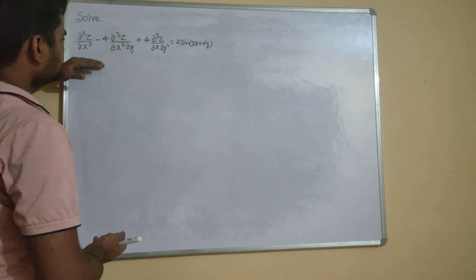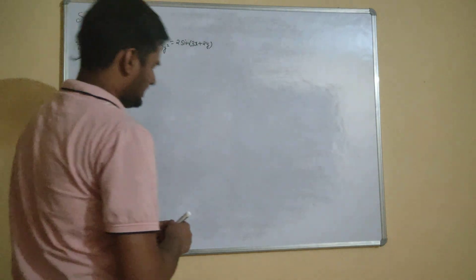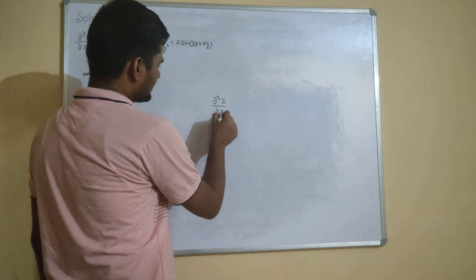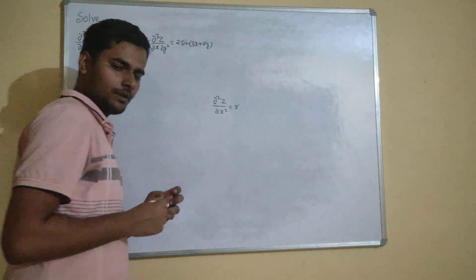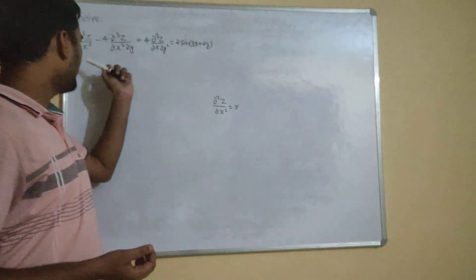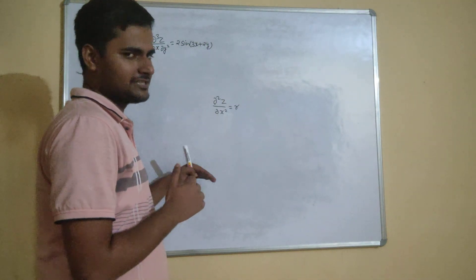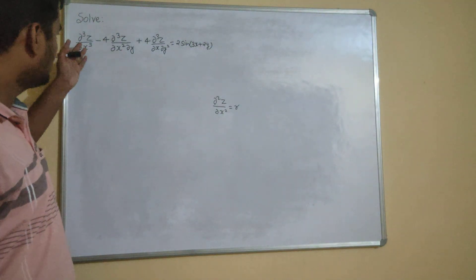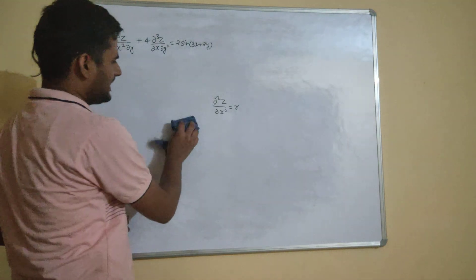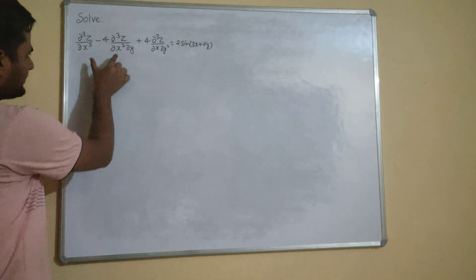This might be given one step before also — they might write things like del²Z/delX² as R. In this question that is not written; they have given it simply. Moreover, we know these notations only up to some stage. We don't know the notations for del²Z/delX³, so because nth order can be given, this notation is preferred in this case.